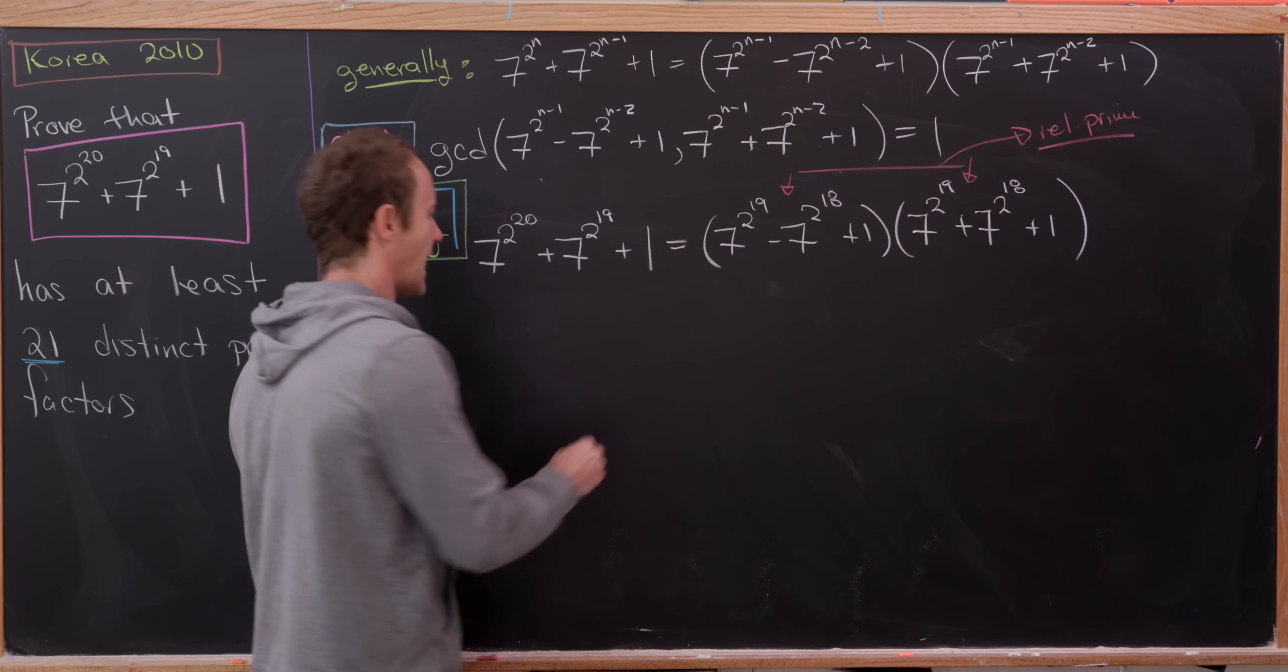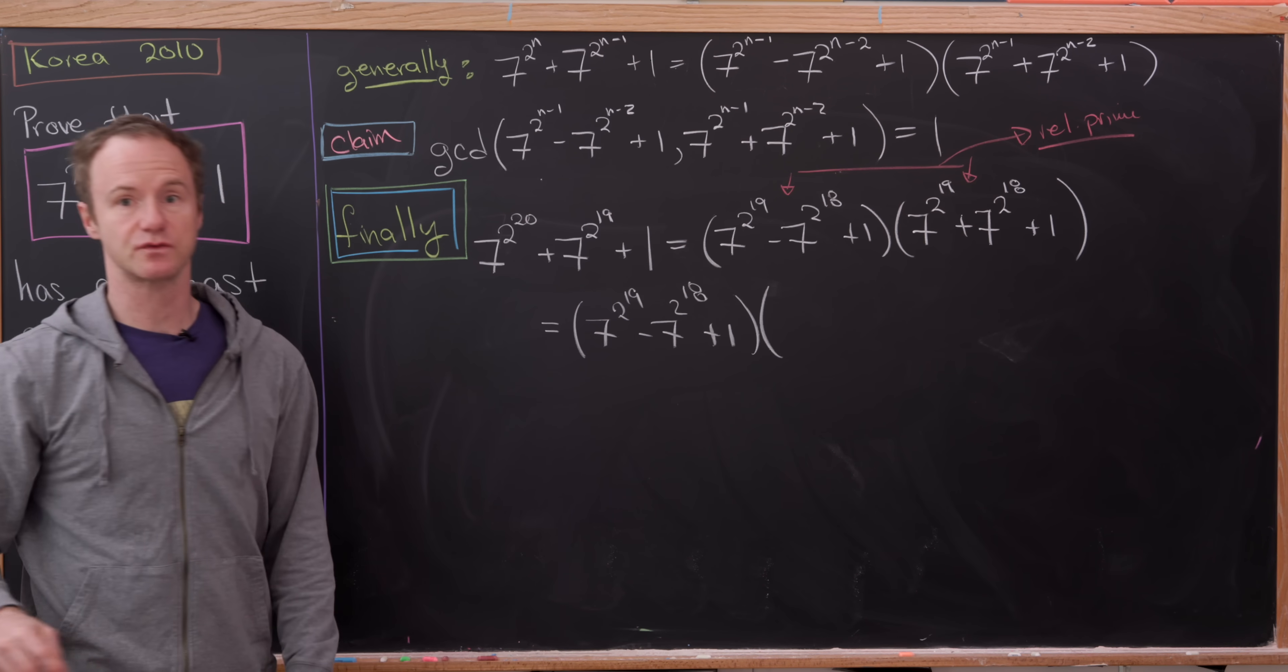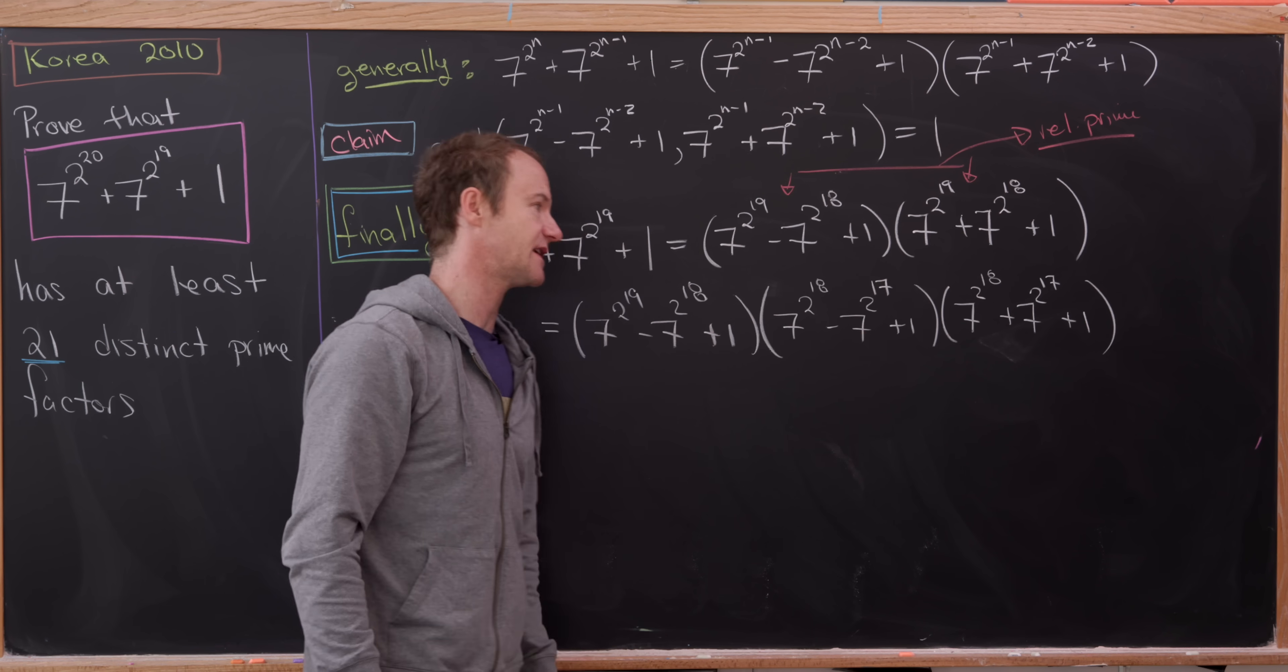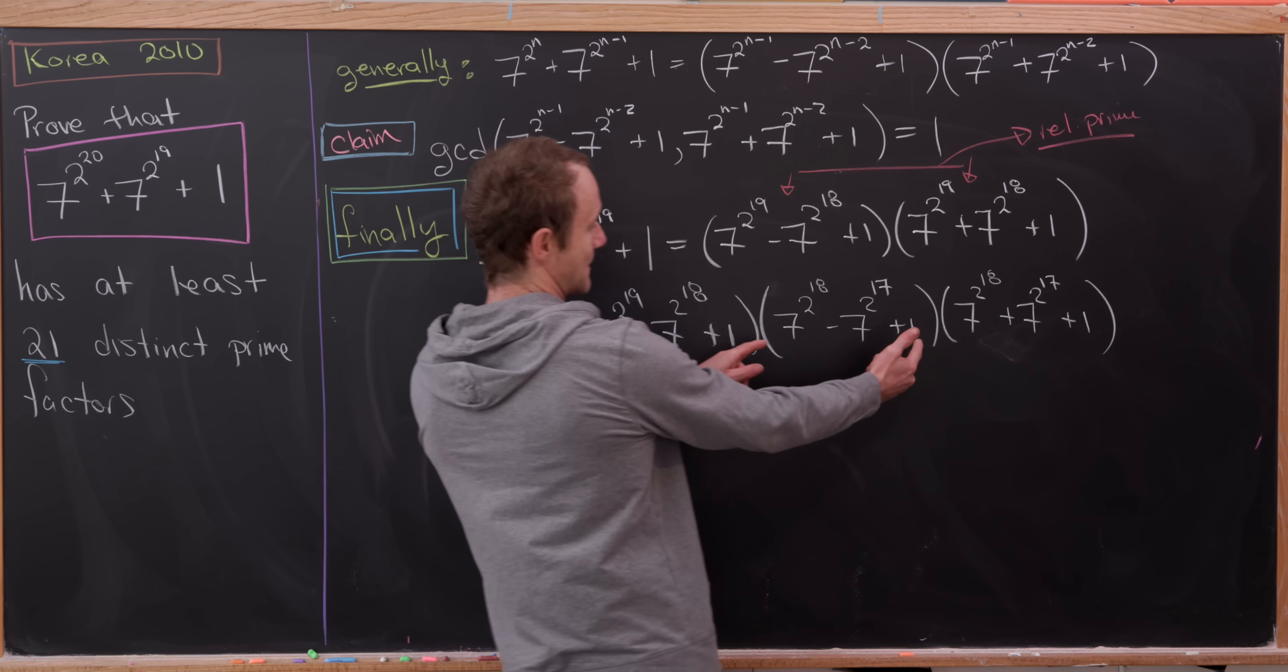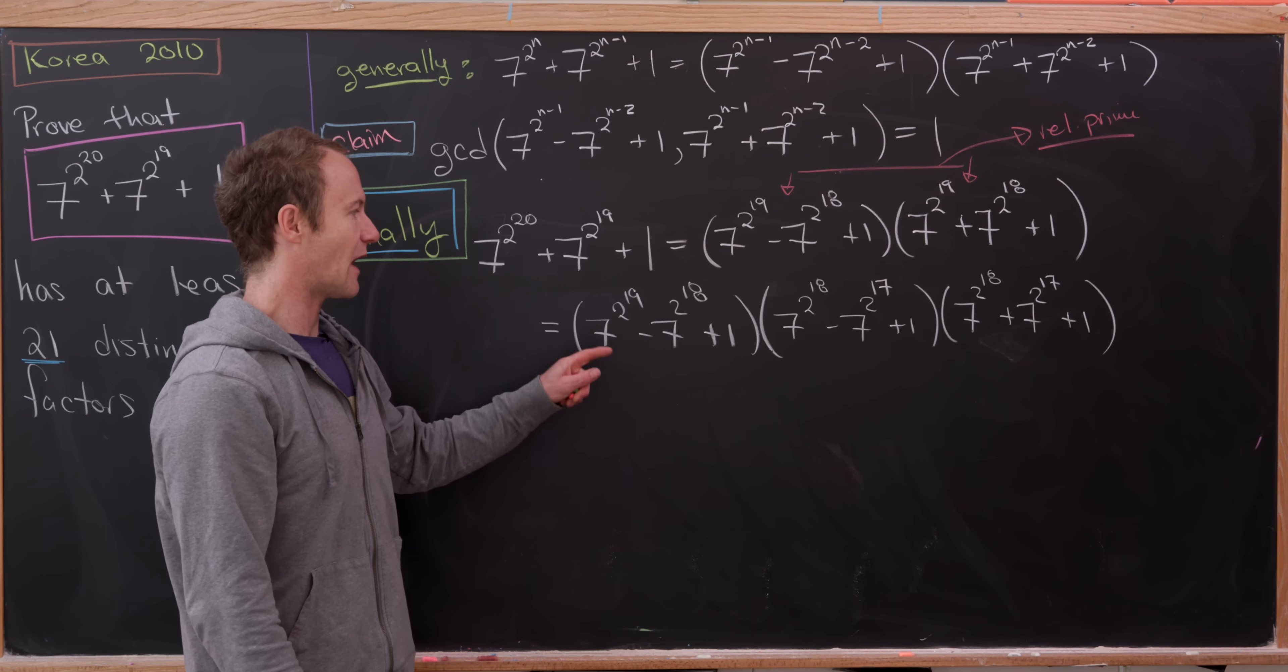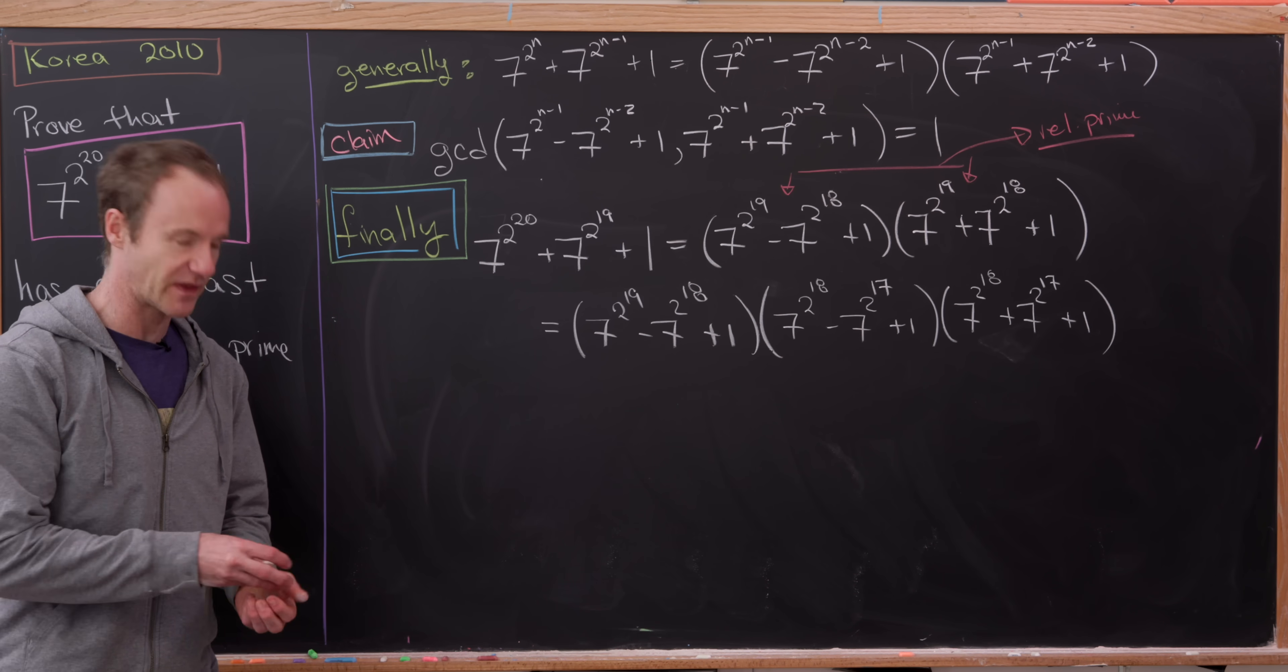But now let's keep going. And we'll write out one step explicitly and then we'll generalize. So let's see. Here I'll just copy this first term down. And then I'll apply the factorization rule to the second term. There we have it. But now since this first term 7 to the 2 to the 19 minus 7 to the 2 to the 18 plus 1 and its companion are relatively prime, then that means that it has to be relatively prime to both of these. Furthermore, this middle object is relatively prime to the last object. So that means at the moment we have three numbers that are all mutually relatively prime. But that means that we have at least three prime factors. A prime factor within this first one. Another distinct prime factor within the second one. And similarly another distinct prime factor within this third one.